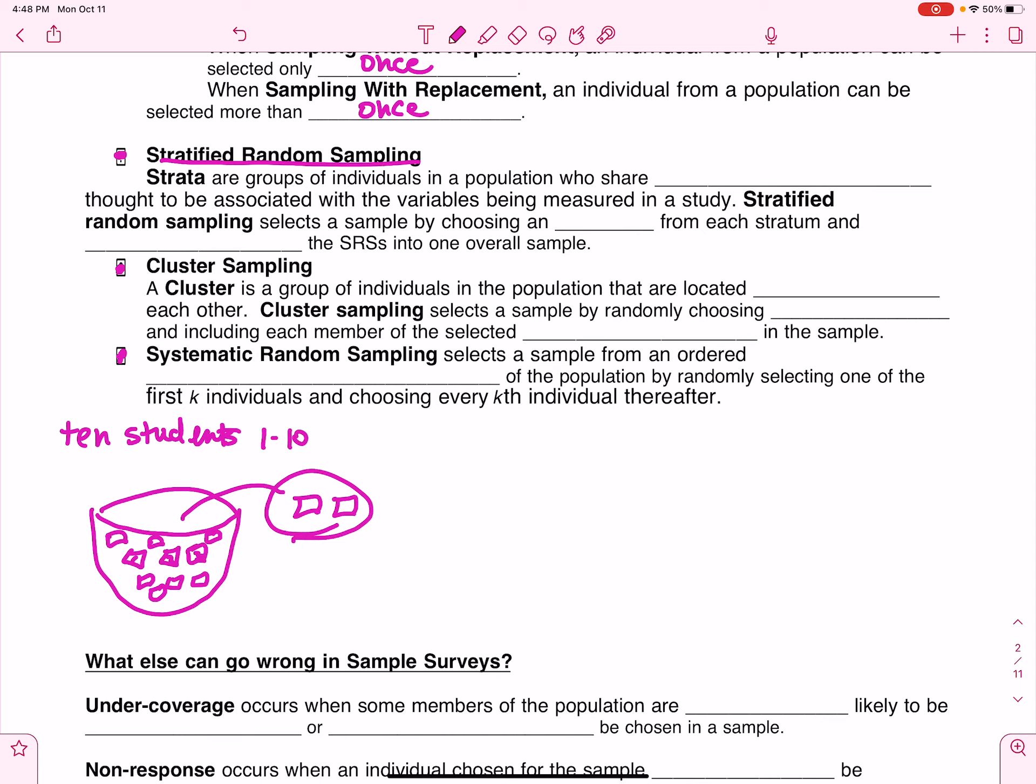So strata are your groups of individuals in your population who share characteristics thought to be associated with the variables being measured in a study. So it depends on the situation.